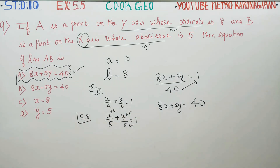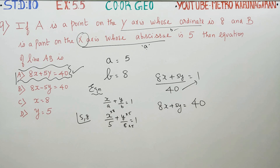If you know the key terms — ordinate means y-intercept, and abscissa means x-intercept — then this is a very easy sum. Thank you.